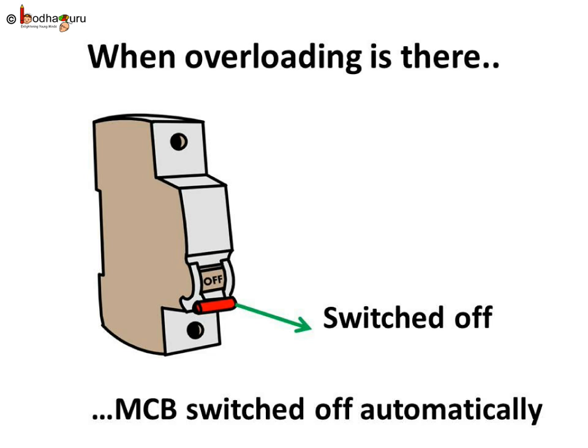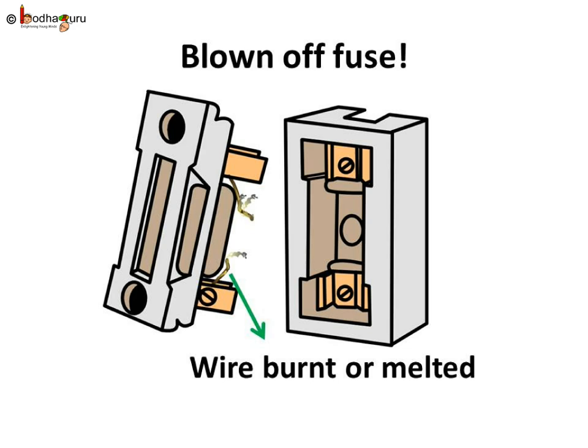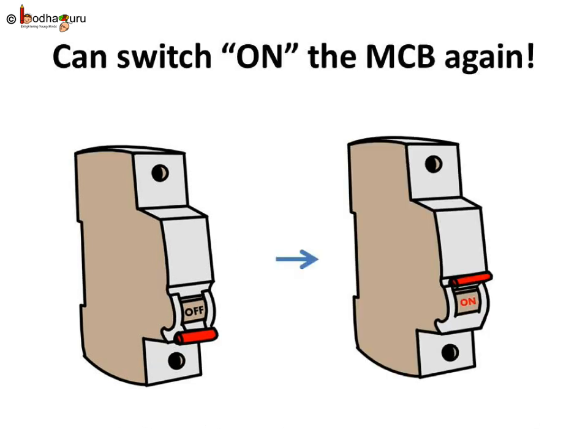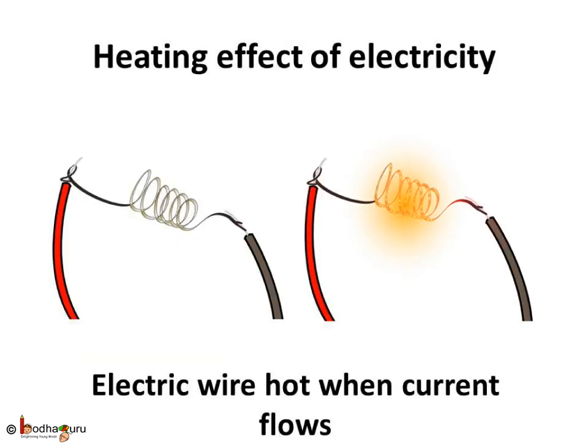As we saw, the wire in an electric fuse gets burnt while saving the circuit. But the MCB is based on the concept of an automatic switch. The MCB is like an automatic switch which gets turned off by itself when the current in the circuit increases abnormally. So we just need to turn on the switch to restart the current flow once the danger is gone. We don't need to replace it every time like a fuse.